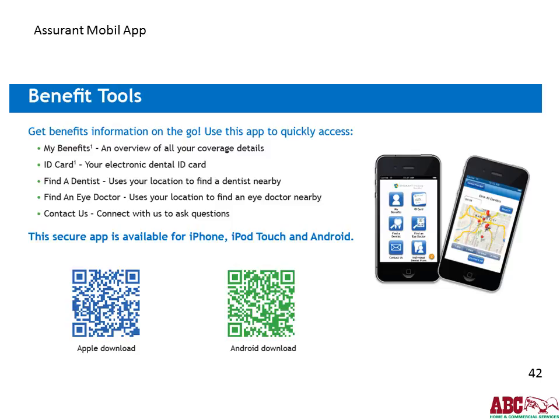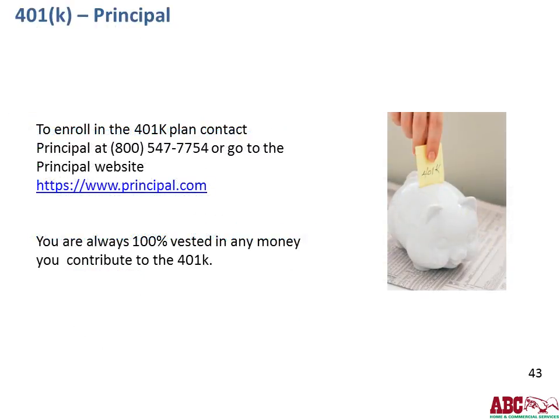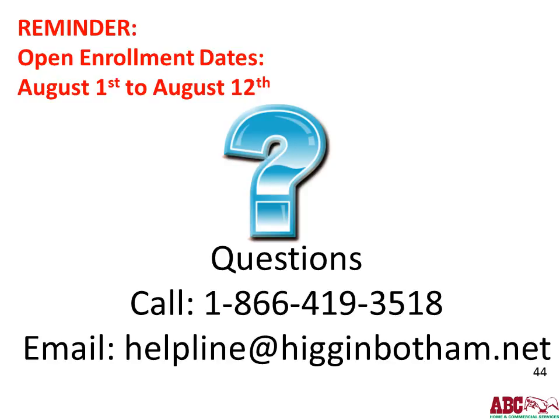Assurant also has a mobile app to access information from your smartphone. Your 401k is through Principal — to enroll, contact Principal or visit their website. As a reminder, you are always 100% vested in any money you put into your 401k. Thank you for listening to this presentation about ABC Home and Commercial Services employee benefit programs. If you have questions, please call Higginbotham at 1-866-419-3518, available 8 to 5 Central. You can also email helpline@higginbotham.net. Please make sure you enroll by the deadline. Thank you and have a great day.